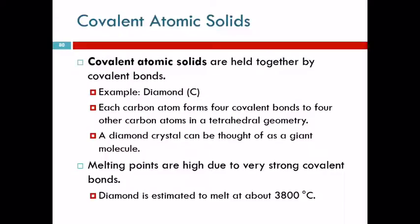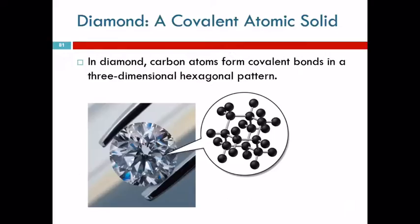Details again on those divisions. Covalent solids held together by covalent bonds. Diamond is another example. A diamond is pure carbon. The carbon atoms are covalently bonded together in a crystalline manner, very organized structure, and it's very strong. It has a high melting point, and it's also very strong. You can cut glass with it. They estimate that diamond would melt at about 3,800 degrees Celsius. A diamond crystal can be thought of as one giant molecule. Here's an illustration of that. The carbon atoms are actually covalently bonded to each other. There's no intermolecular forces involved here. It's all covalent bonds.